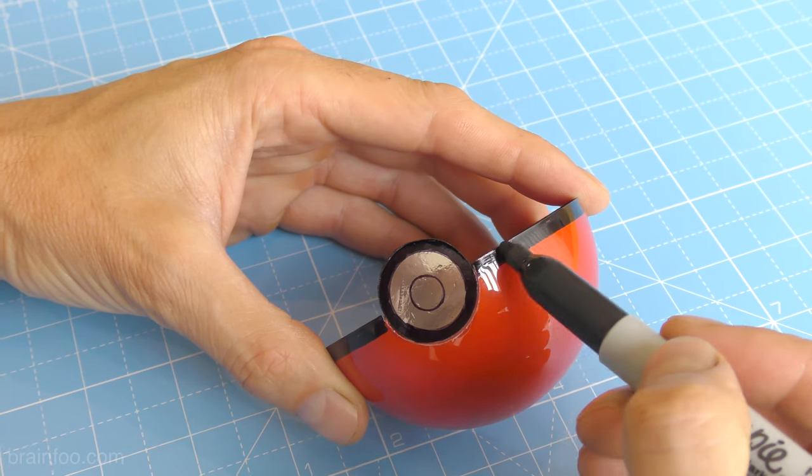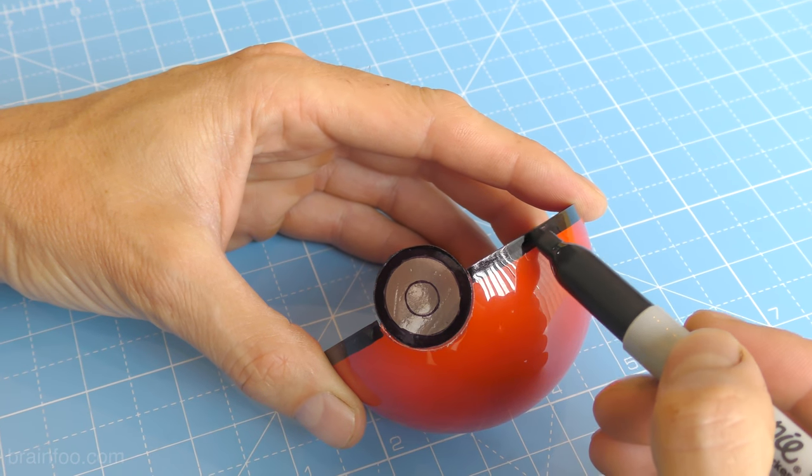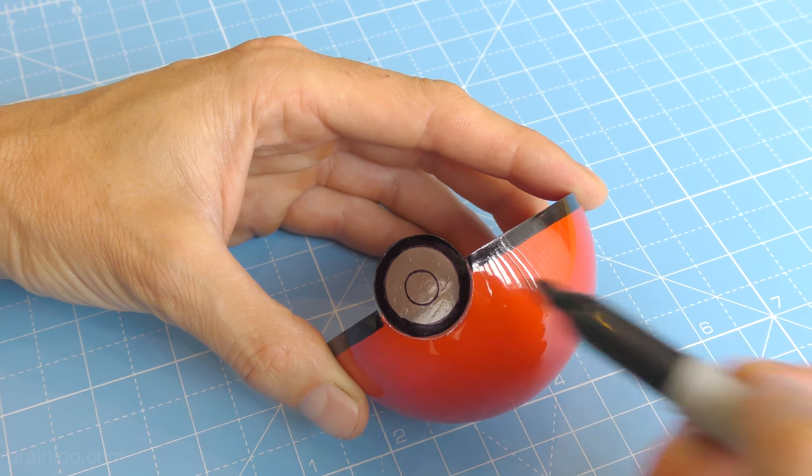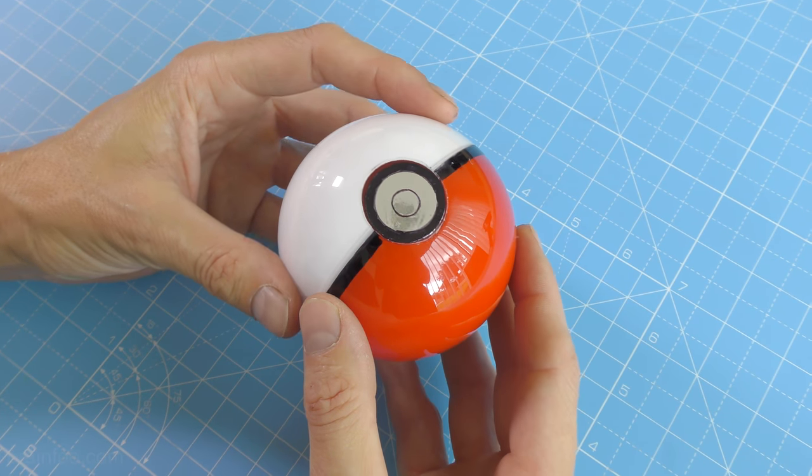If you do have any black details that need touching up you can do that now. And as long as you don't draw over onto the painted sections, it will go unseen in the final build. Clip it together and there you go done.